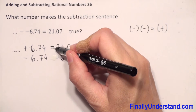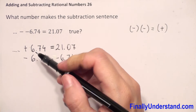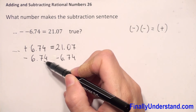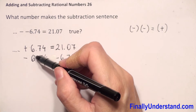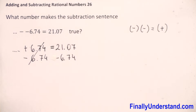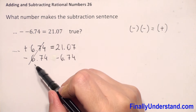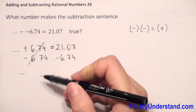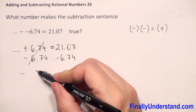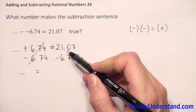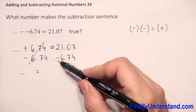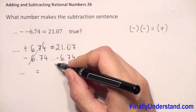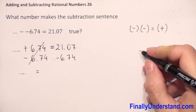We can always add to both sides the same number or subtract the same number when we have an equation. When we subtract 6.74 from the left side, 6.74 minus 6.74 is 0, so we're left with just the unknown. This is equal to 21.07 minus 6.74.